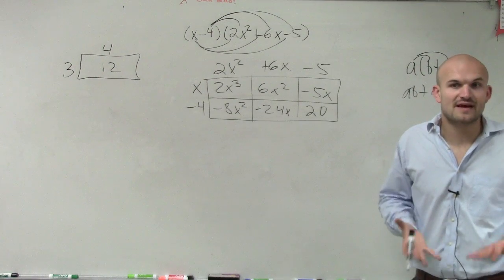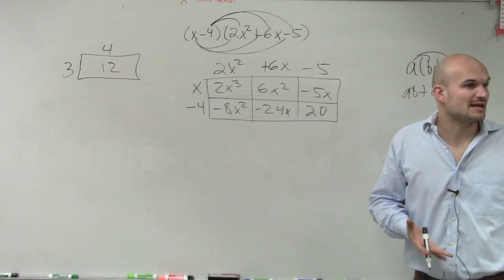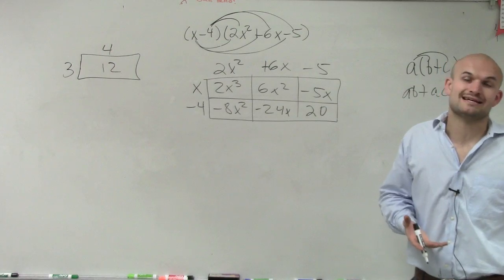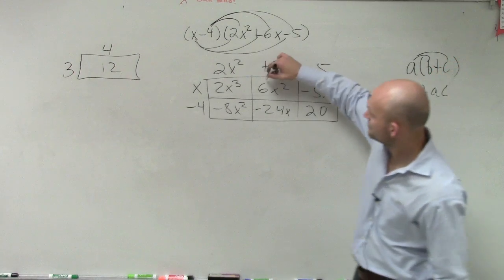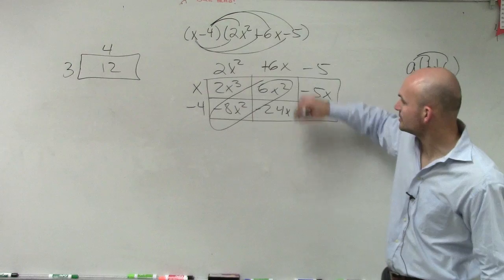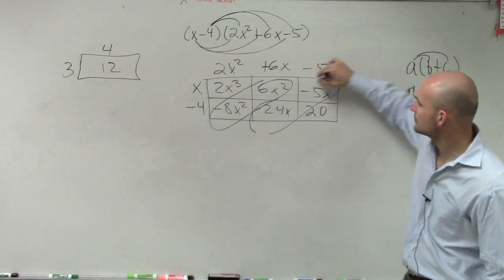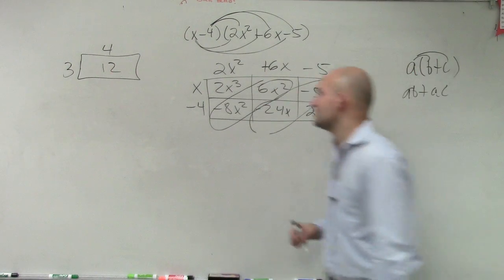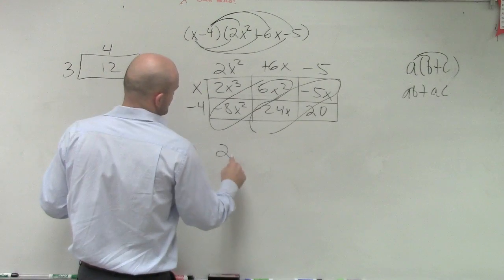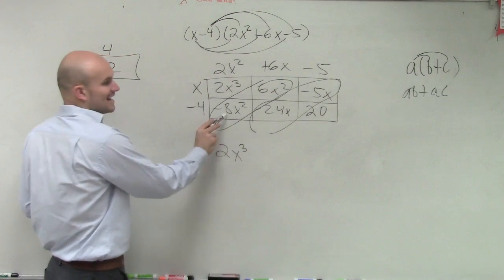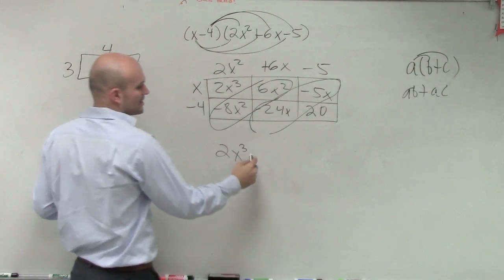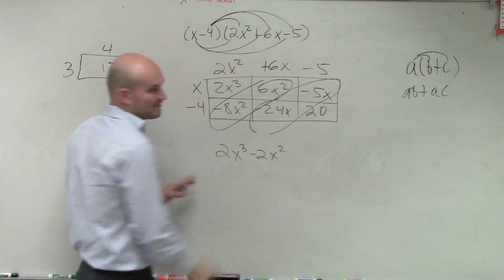Now the last step we want to do is make sure we can combine the terms that are the same. Remember, we can only combine if they have the same variable factors, meaning like x squareds with x squareds, x cubed with x cubed. So you notice these are both x squareds and these are both x's. So therefore I can combine them. So my final answer is 2x³, negative 8x² plus 6x² is negative 2x². Does everybody follow me with what I did there?